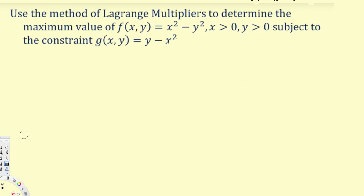In this video we are going to see how to use the method of Lagrange multipliers to determine the maximum value of a multivariable function. We have a multivariable function and also a constraint equation, and when we have these two, we find the critical points using this equation.